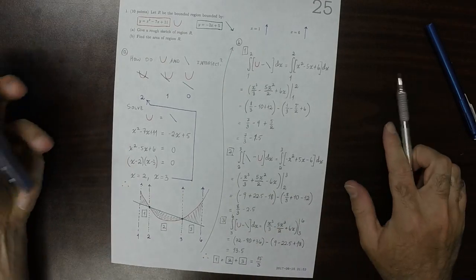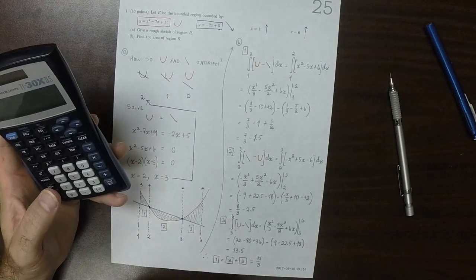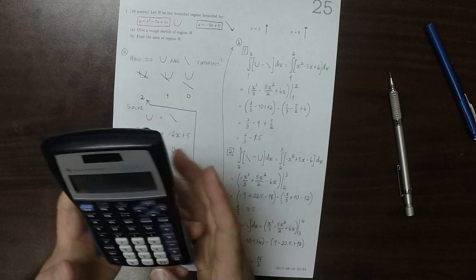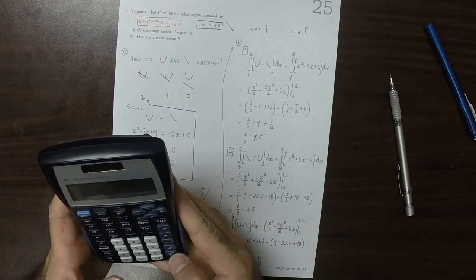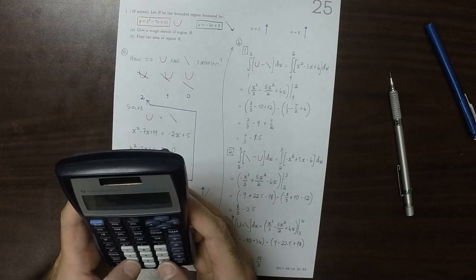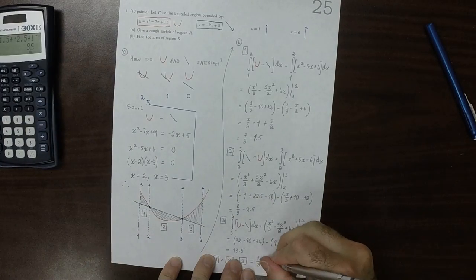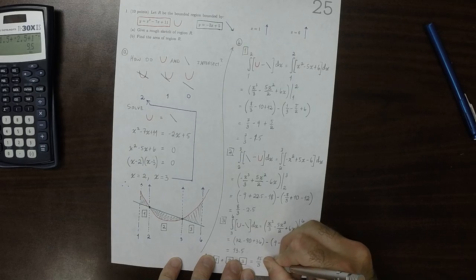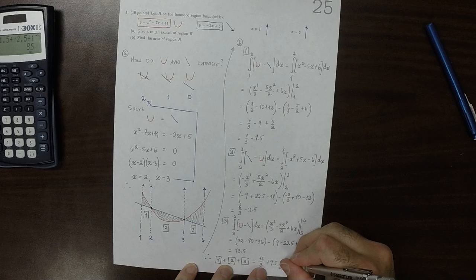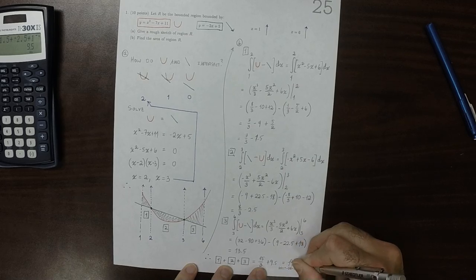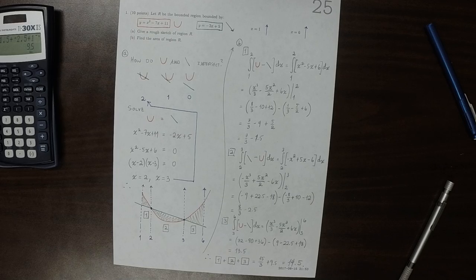it would be negative 1.5 plus negative 2.5 plus 13.5 plus 9.5. 15 over 3 is 5, so altogether the answer is 14.5, 16, 17.